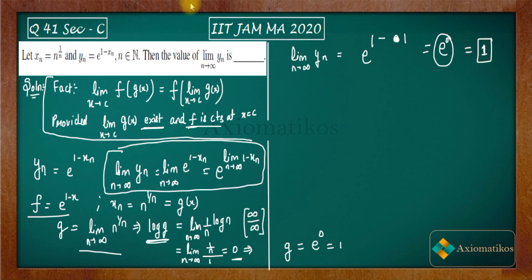So let us write. So what is your answer? Your answer is 1 for this one. So we are just using this fact that we can interchange the limit between the composition provided that this limit should exist and F should be a continuous function at X is equal to C. Now what happened here is this that we evaluated limit of XN and we got that limit exist and it is equal to 1 and we know that E to the power 1 minus X is a continuous function.